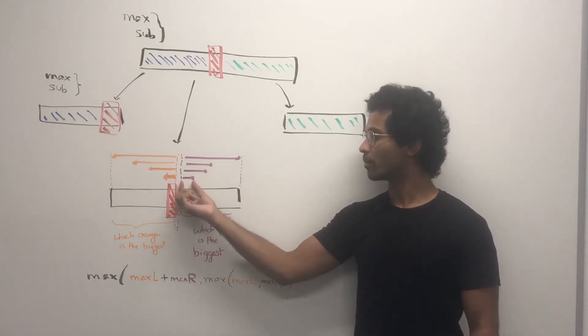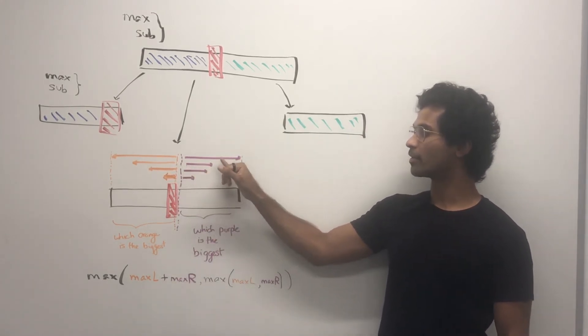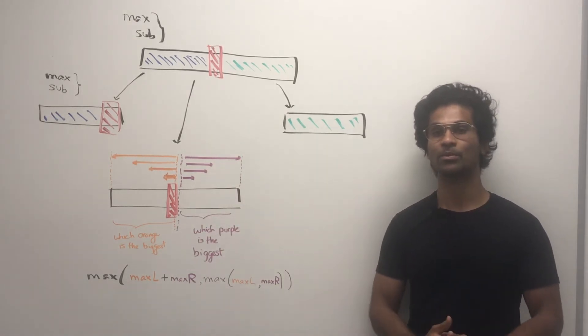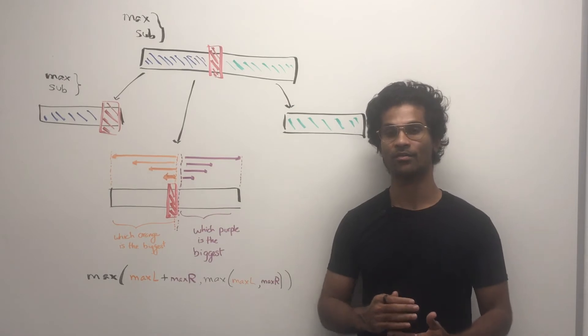And then we have a purple, another purple, purple, purple. And we pick out of these, which is the largest purple bar. And that's going to represent the biggest sum that we have on the right side.